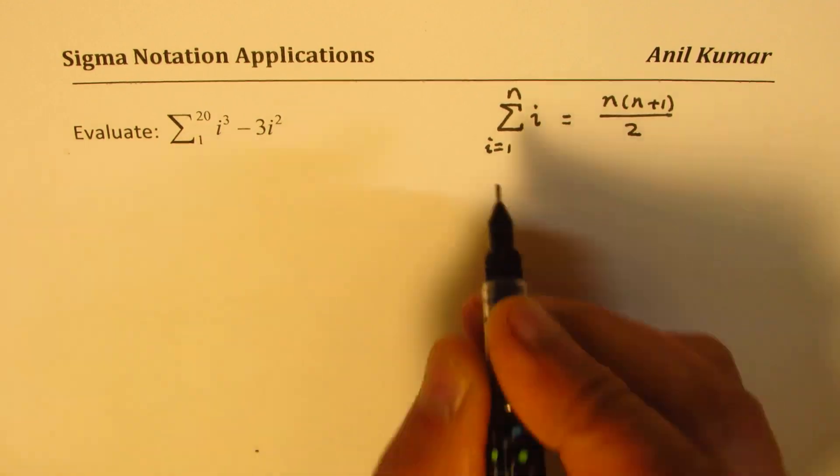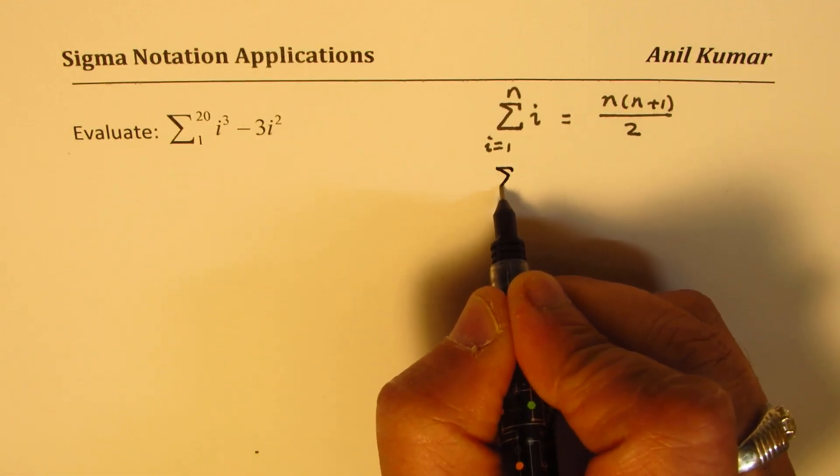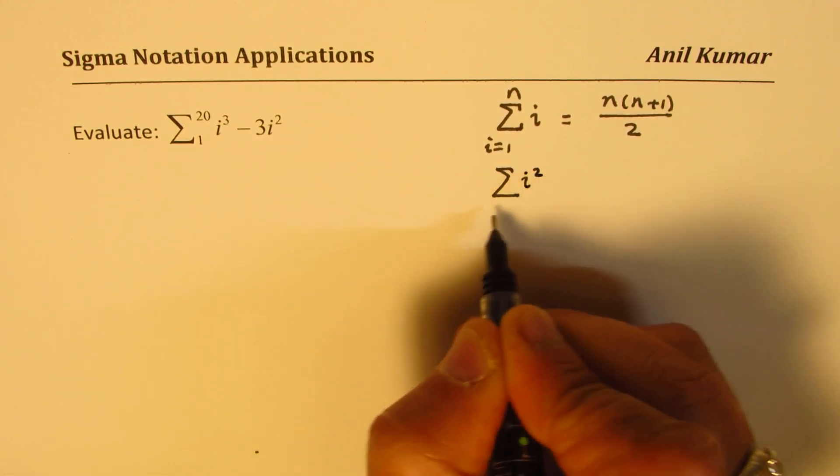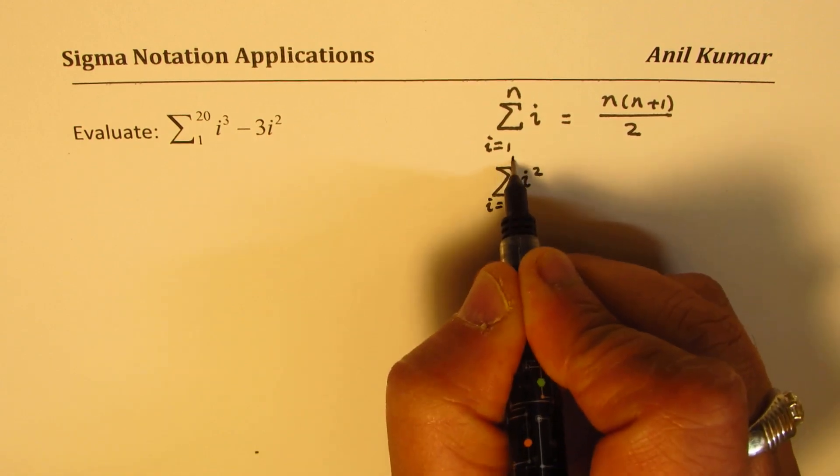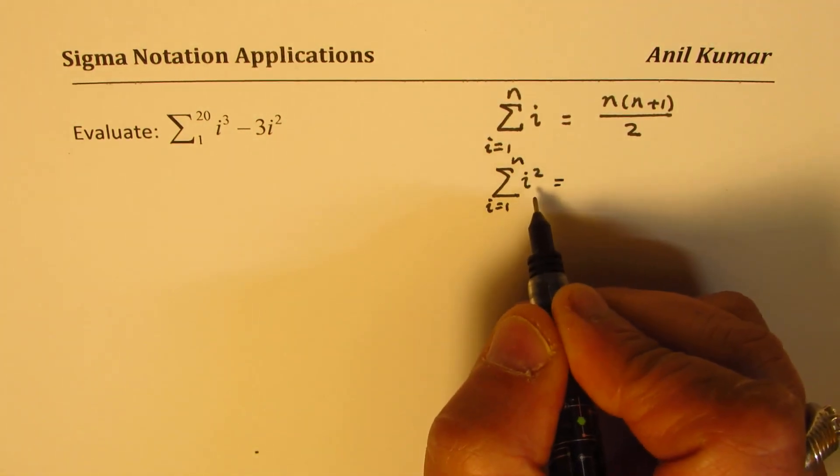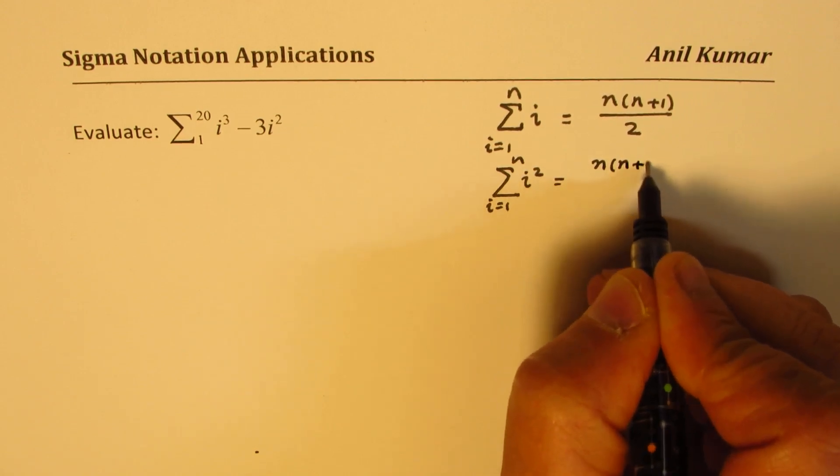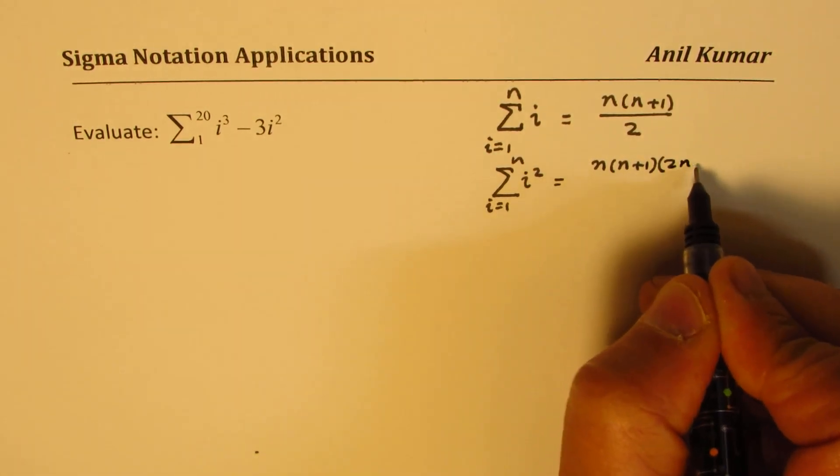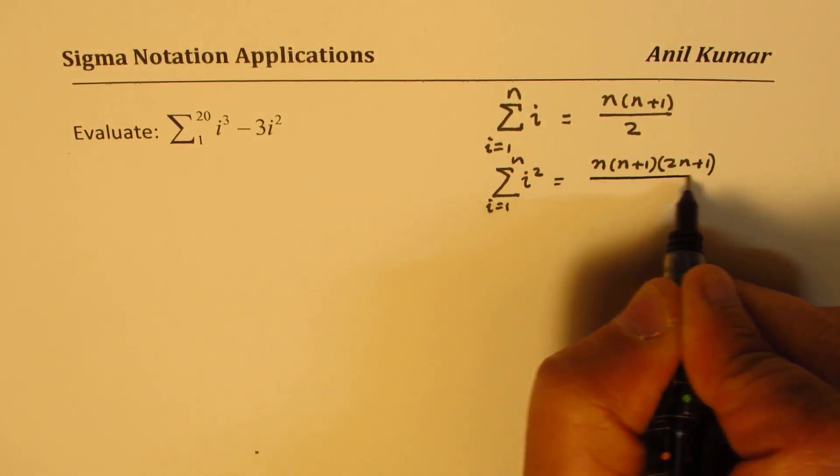Well, we need square and cube. So we need the other two actually, which is i squared, i equals 1 to n. So when it is squared, then the sum of squares will be n into n plus 1 times 2n plus 1 divided by 6.